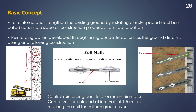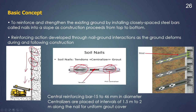A soil nail generally consists of three components: a tendon (the main bar), centralizers, and grout material. The central reinforcing bar is generally 15 to 46 millimeters in diameter. PVC centralizers are placed at regular intervals of 1.5 to 2 meters along the length so that the grouting can be uniform throughout the nail. In a grouted soil nail, the reinforcing bar (tendon), centralizers, and grout are connected with a nut and bolt, and a facing is provided. Reinforcing action is developed through soil nail–ground interaction as the ground deforms during and following construction.